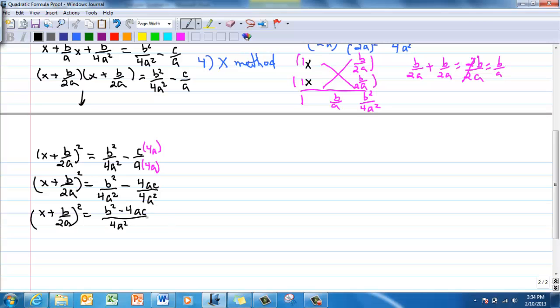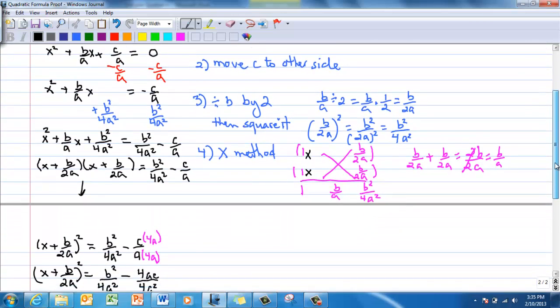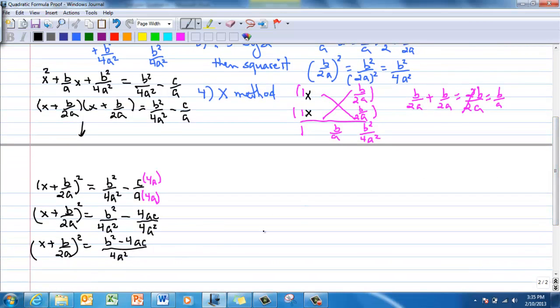This is starting to look familiar. This is the discriminant. The discriminant is that part of the quadratic formula. It's getting closer. In the denominator, I have 4a squared. Not 2a, but I'm getting there.